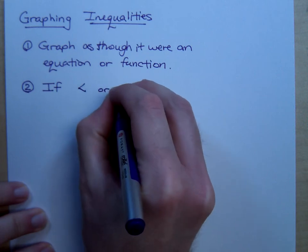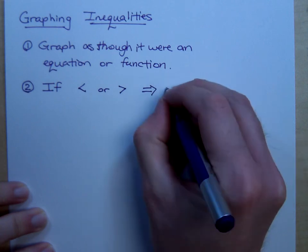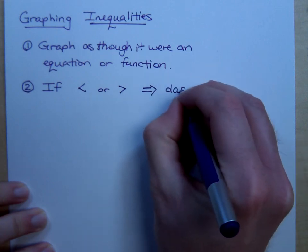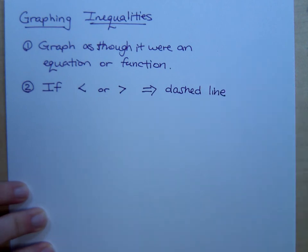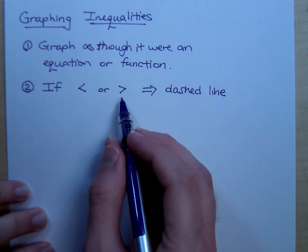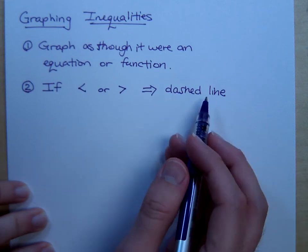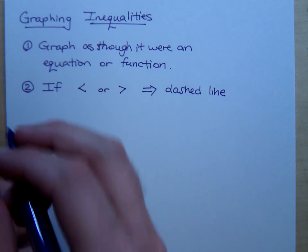If you see less than or greater than, just like this, what that means for us is that we're going to have a dashed line. With the inequalities that we've already done, you've seen that whenever we are graphing on the number line, we would use an open circle. Well, the same thing would happen here. If you have less than or greater than, you're going to be plotting open circles. And then whenever you connect the dots, you're going to be graphing a dashed line or a dashed curve in the case of parabolas.